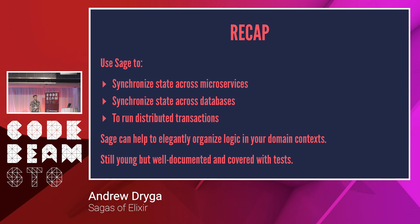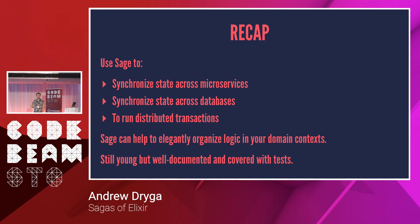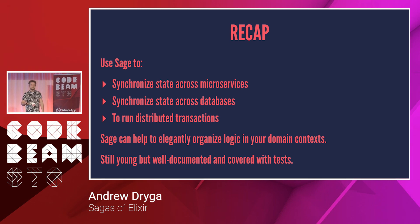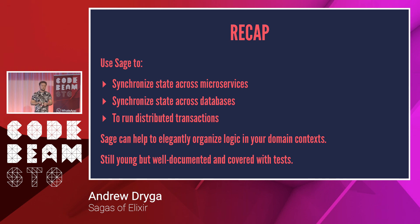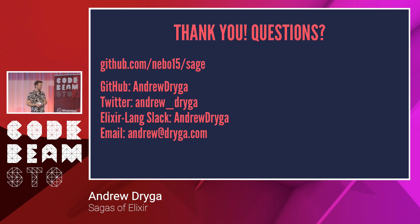Short recap: you can use Sagas to synchronize state across microservices — though that's a complex scenario with a lot to consider, like not using microservices at all. You can use them to sync data state across databases, and to run these mixed transactions, which is where Sage fits best: dealing with third-party APIs that are unlikely to change on our demand, not very available, and completely out of our control. The Sage project is pretty young but well-documented and covered with tests — I get 100% coverage, but I don't know what edge cases are missed, as always. And that's all, thank you.